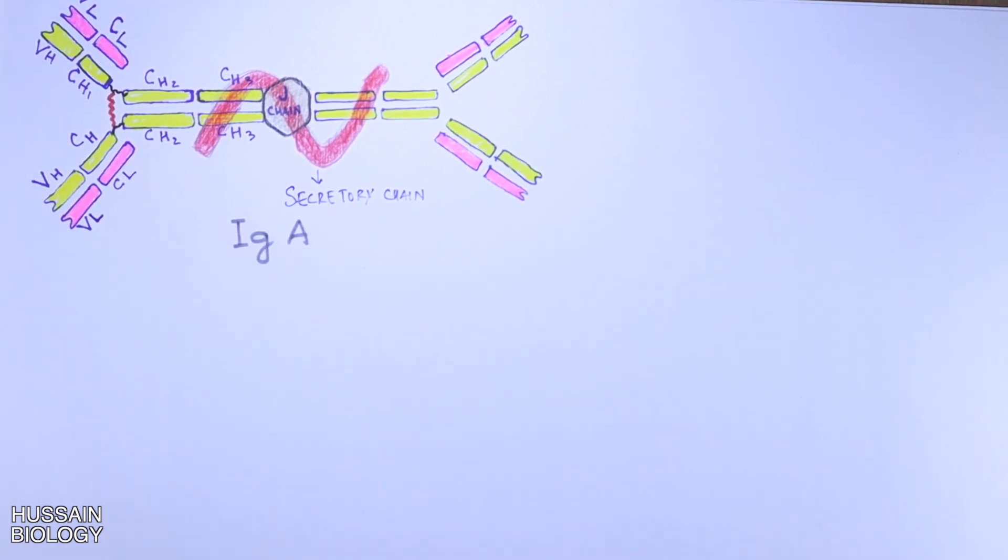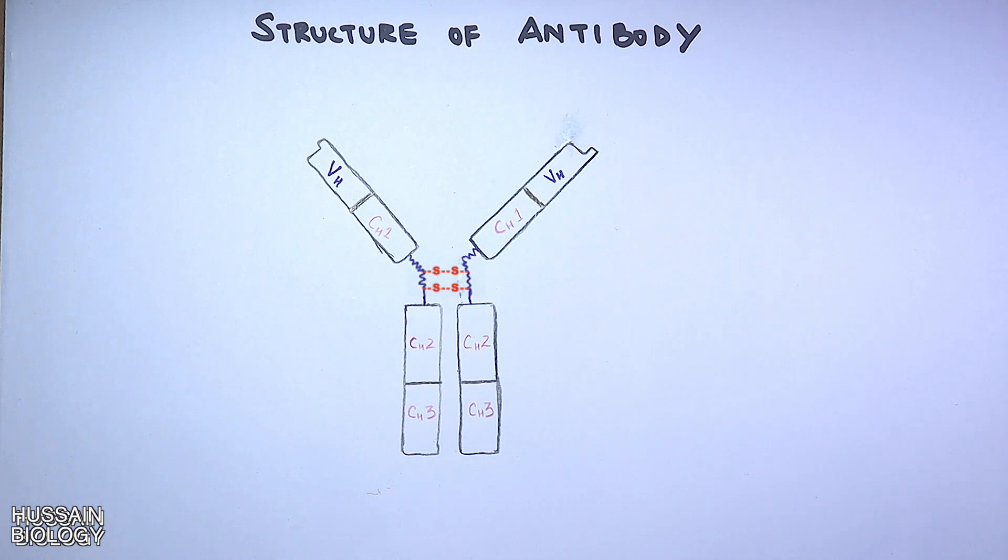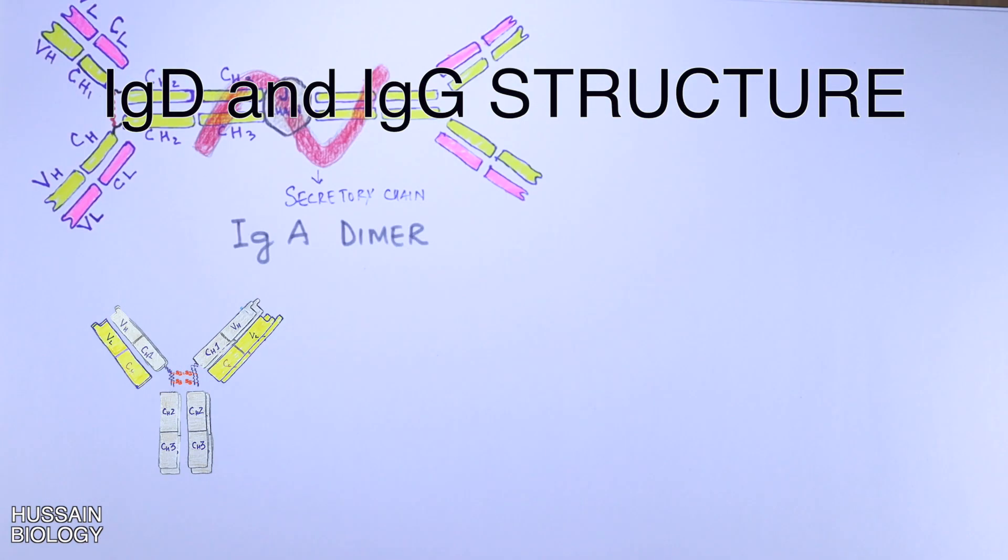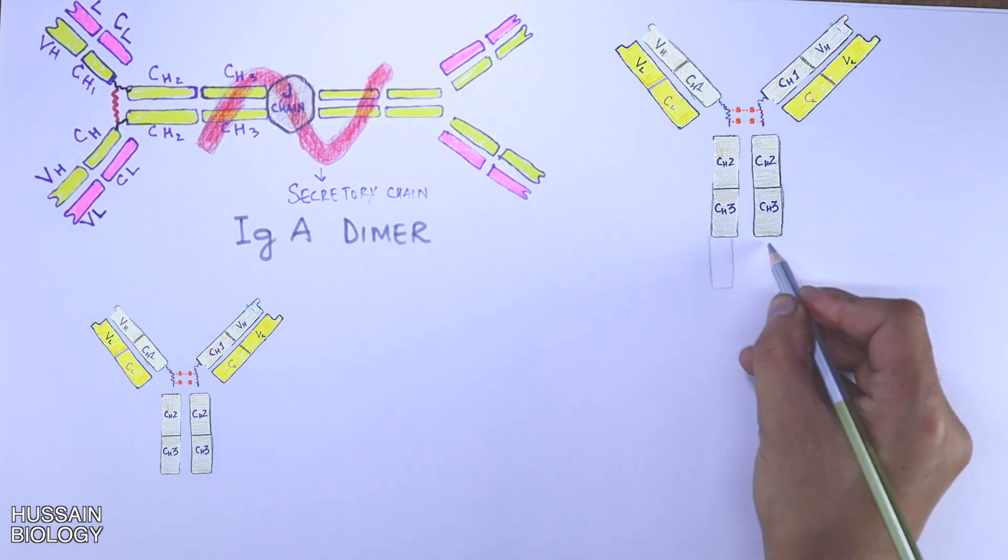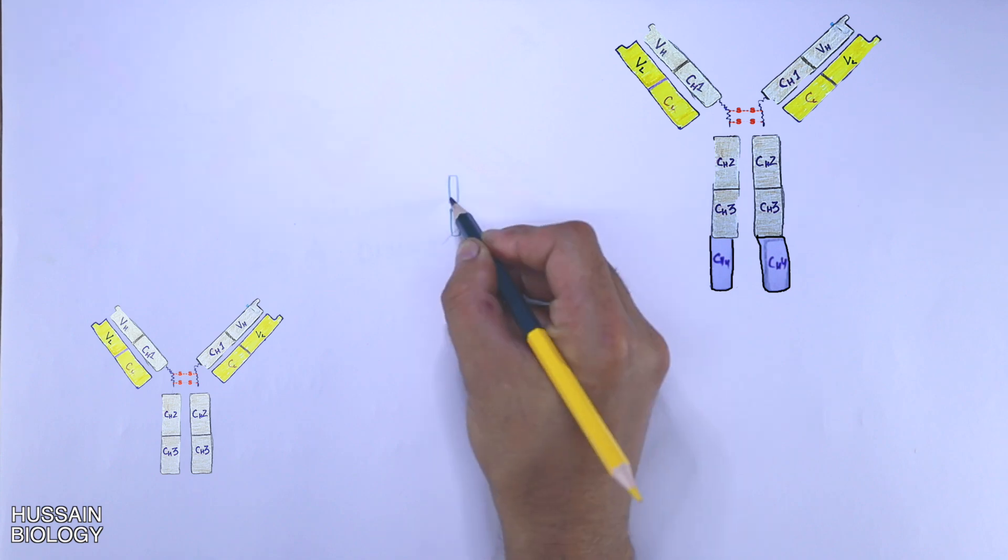So this forms as the complete IgA dimer. Then we have IgD and IgG which occur in monomer forms only as shown in the diagram. In the same way, IgE has same structure but here it has one extra domain in its heavy chain as shown in the diagram.